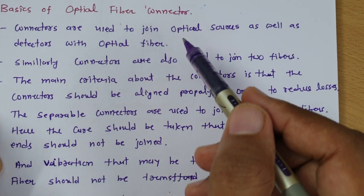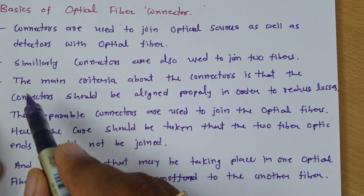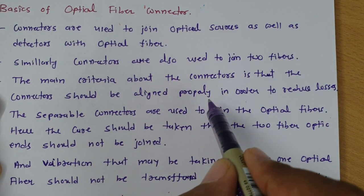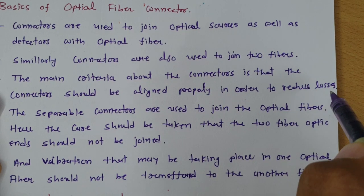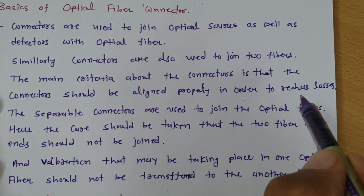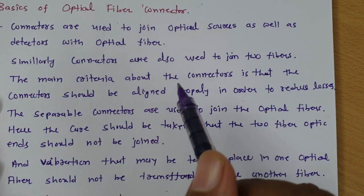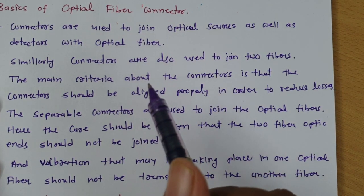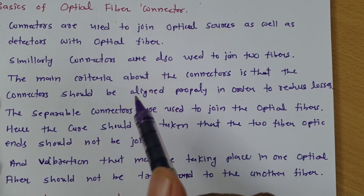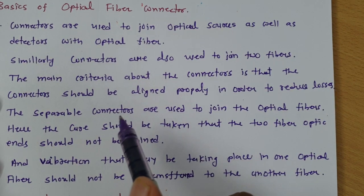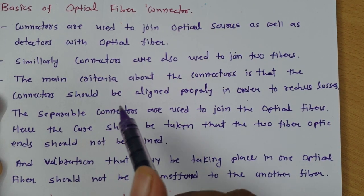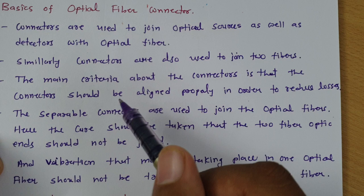The main criteria about the connector is that it should be aligned properly in order to reduce losses. The major idea behind a connector is to have connection of two fibers, or connection of fiber with source, or connection of fiber with detector, but that connection has to have minimum losses.